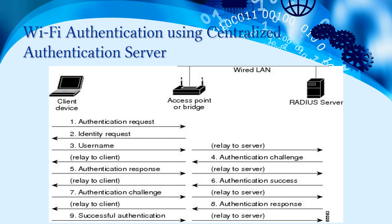This picture shows in detail how centralized authentication works in the wireless authentication process. The client device sends an authentication request to the access point, which responds asking the client to specify a username. The username is relayed to the RADIUS server, where it is validated. An authentication challenge is sent back through the access point to the client, and the client responds with the authentication response, which is sent to the RADIUS server. If the password matches, authentication is successful and a success message is sent to the access point.